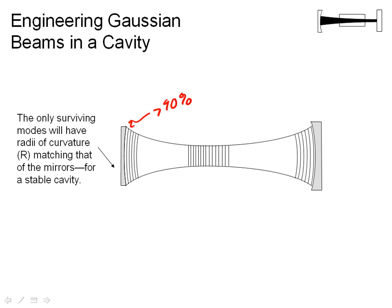And what this means is that the radius of curvature of the beam has to match that of the mirrors after a round trip. Because if you have light that goes through, bounces off a mirror, comes back, and the radius of curvature is different each time it comes, it doesn't match the mirror.